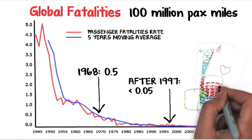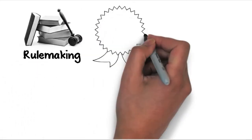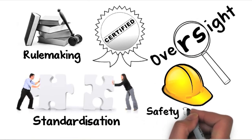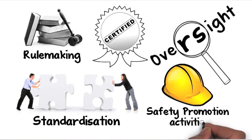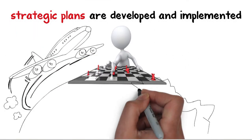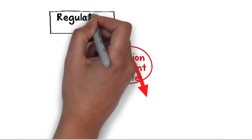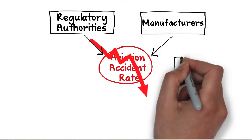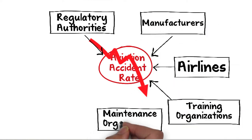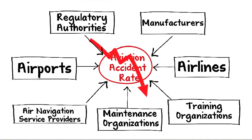This has not been achieved by chance. It is the result of rulemaking, certification, oversight and standardisation, and safety promotion activities. Strategic plans are developed and implemented at worldwide and regional levels by collaborative efforts between the regulators and the industry, including manufacturers, airlines, training organisations, maintenance organisations, air navigation service providers, airports and other stakeholders.